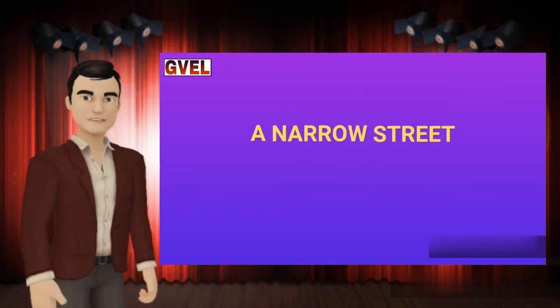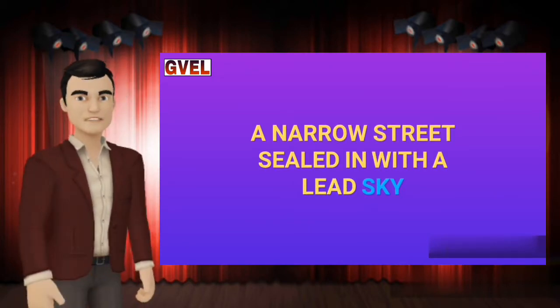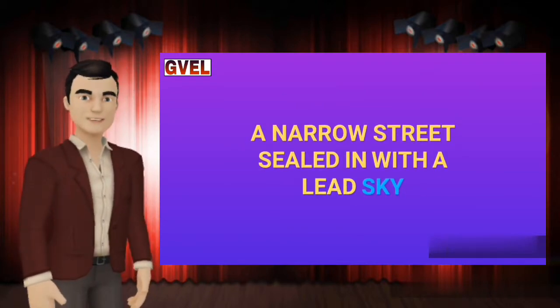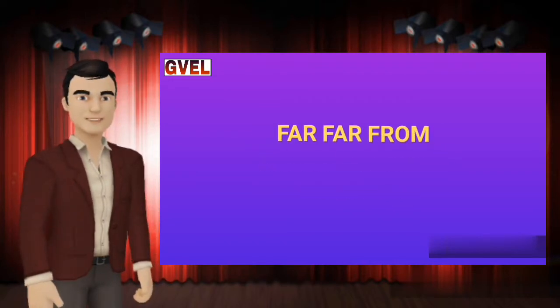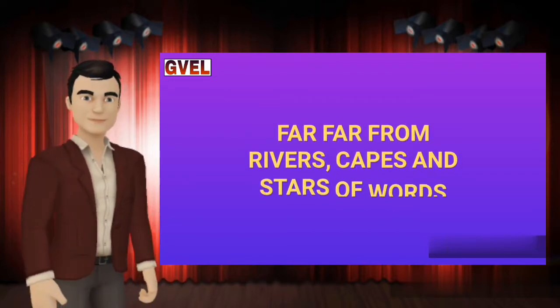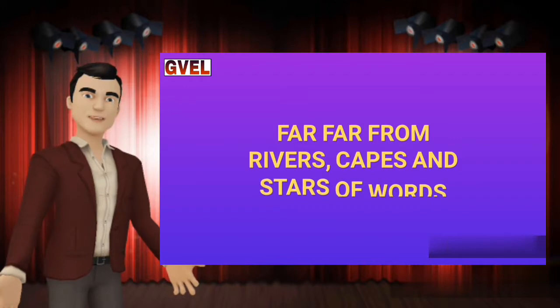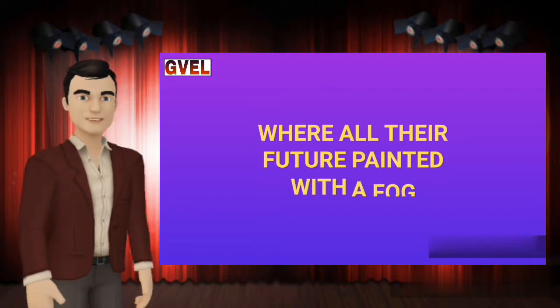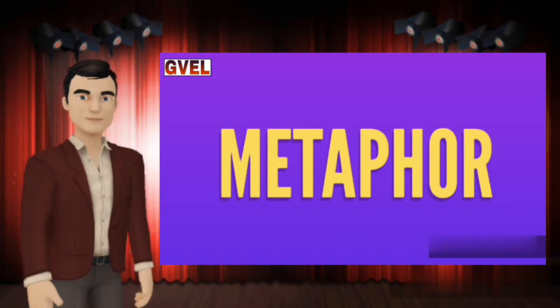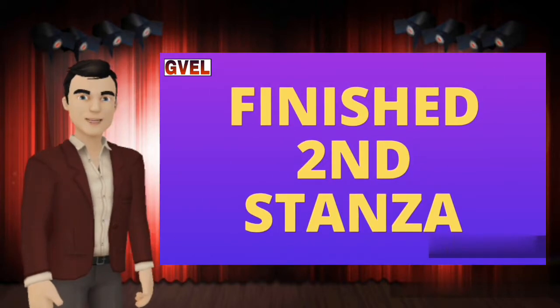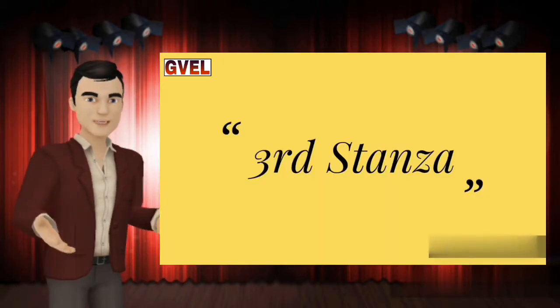'A narrow street sealed with a lead sky.' — Ye bachche sankri, tang patli gali mein rehte hain jo ek bhoore feeke rang ke aasman se dhaki hui hai — they live in a narrow lane covered by a dull leaden sky. 'Far far from rivers, capes and stars of words.' — Jo nadiyon, khadiyon aur sachchi education se door bahut door hain — far from rivers, capes, and real education. 'Where all their future painted with a fog' — the poet uses the poetic device metaphor in this line.